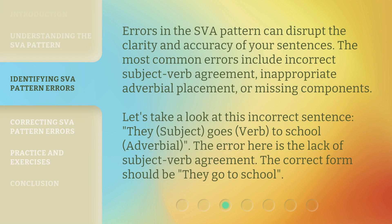Errors in the SVA pattern can disrupt the clarity and accuracy of your sentences. The most common errors include incorrect subject-verb agreement, inappropriate adverbial placement, or missing components. Let's take a look at this incorrect sentence: 'They (subject) goes (verb) to school (adverbial).' The error here is the lack of subject-verb agreement. The correct form should be: they go to school.